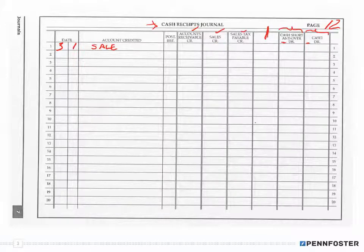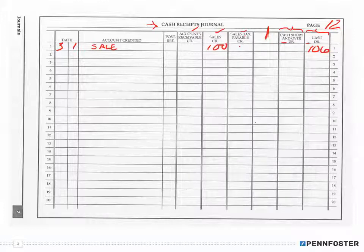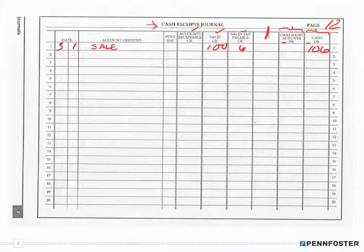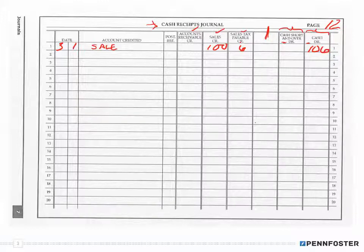Let's say I sold something for $100 and I have six percent sales tax, and I receive cash for it. The cash I'm going to receive is a debit for $106. My sale is going to be $100, and my sales tax that I'm going to pay out is $6. My debits equal the total of my credits. I'll be using the cash account, the sales account, and the sales tax payable account.